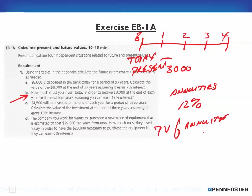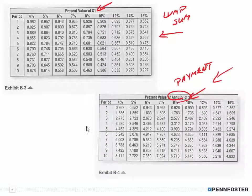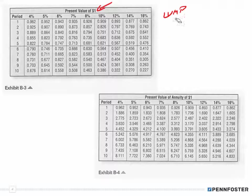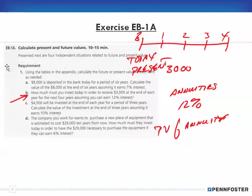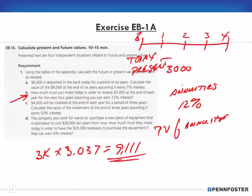I go to the present value of an annuity table, look up 12% interest for four years, and cross-reference to get a factor of 3.037. Multiplying $3,000 by 3.037 gives $9,111. So I must invest $9,111 today in order to receive $3,000 per year over the next four years at 12% interest.